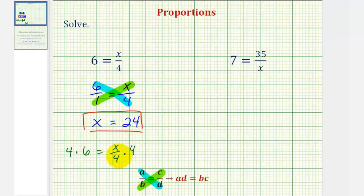Notice on the right side, these fours would simplify to one, leaving us with our solution, x equals 24.